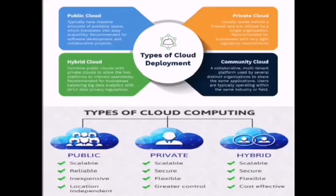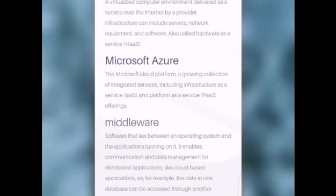Second, Infrastructure as a Service (IaaS), which is used for internet-based access to storage and computing power, is the most basic category of cloud computing types. IaaS lets you rent infrastructure servers and virtual machines, storage, network, and operating systems from a cloud provider on a pay-as-you-go basis.